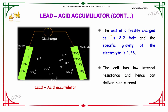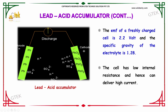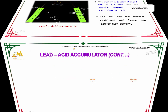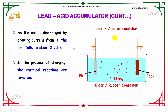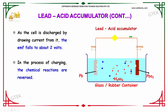The EMF of a freshly charged cell is 2.2V and the specific gravity of the electrolyte is 1.28. The cell has low internal resistance and hence it can deliver very high current. As the cell is discharged by drawing current from it, the EMF falls to about 2V. In the process of charging, the chemical reactions are reversed.